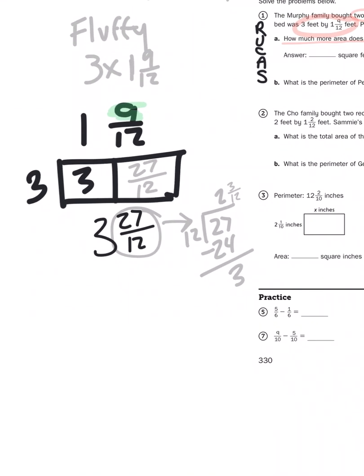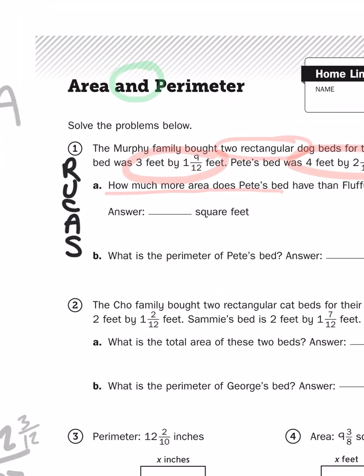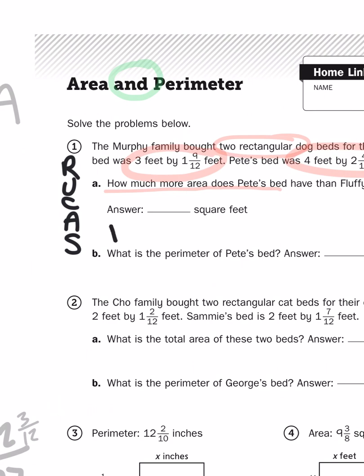So now I've got 3 and a mixed number of 2 and 3 twelfths. And when I combine that together, I get a total of 5 and 3 twelfths. So Fluffy's bed equals 5 and 3 twelfths feet squared.